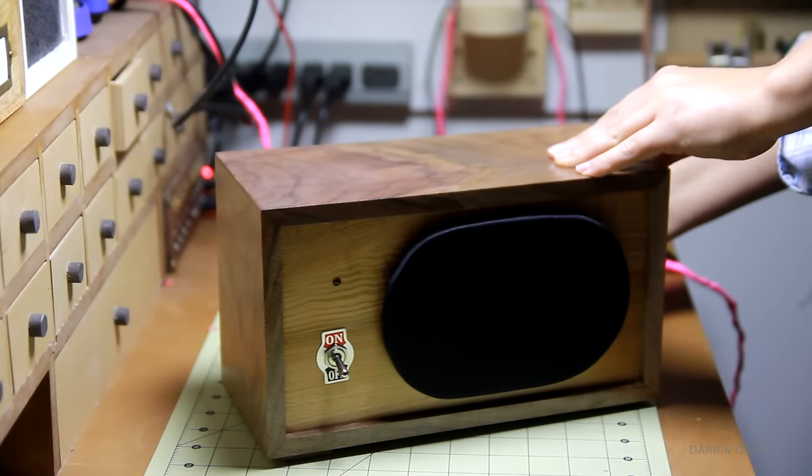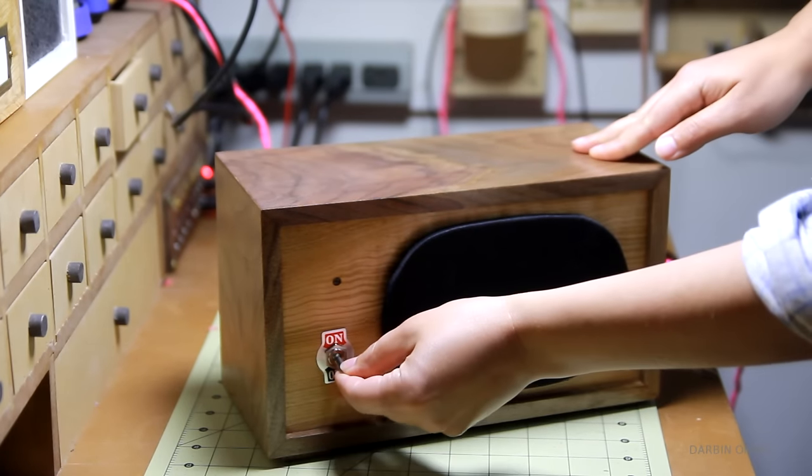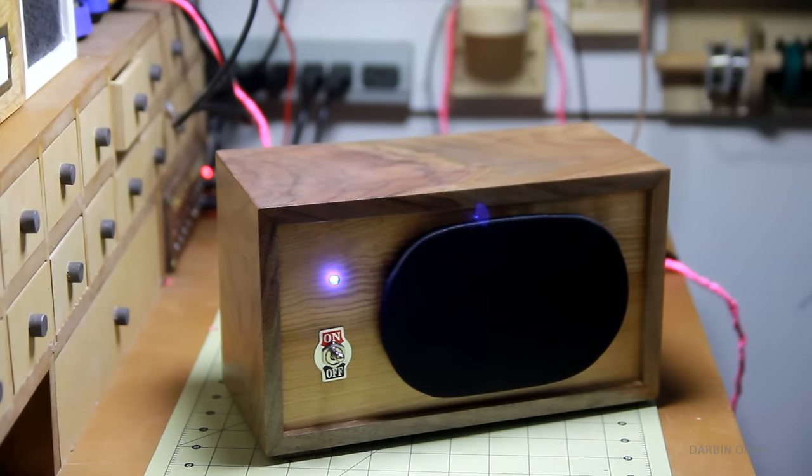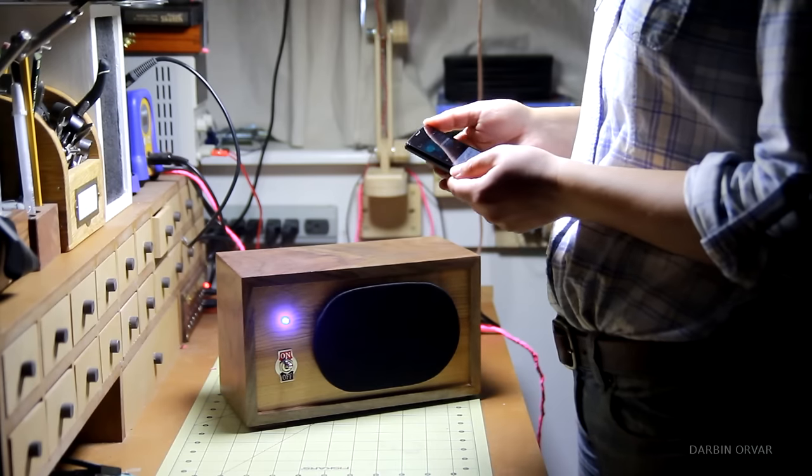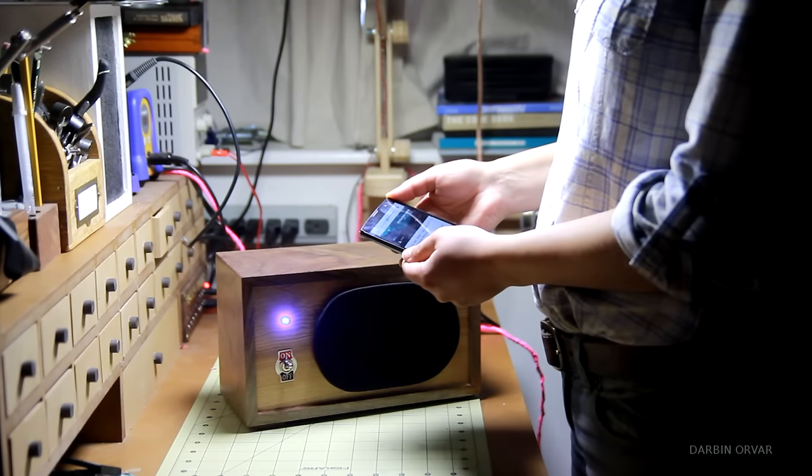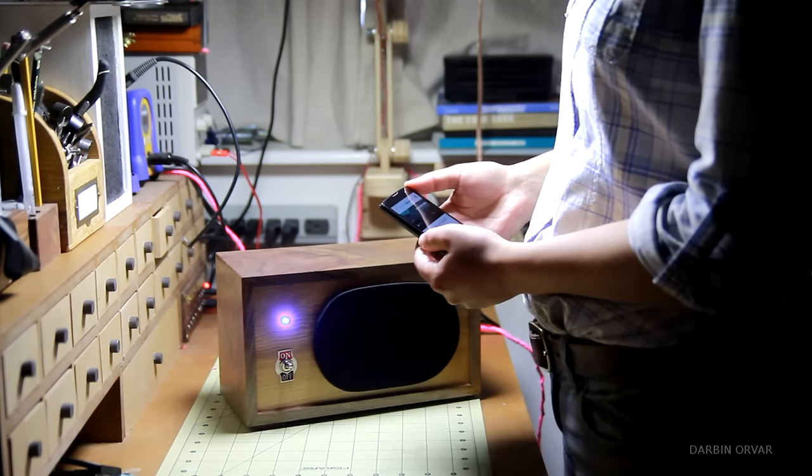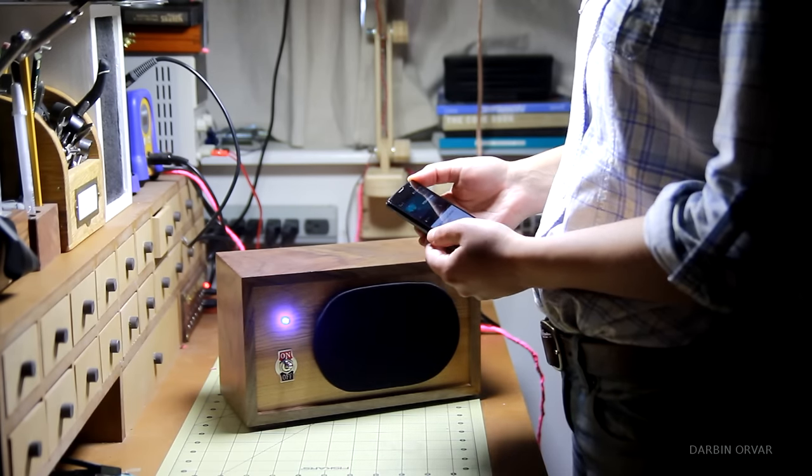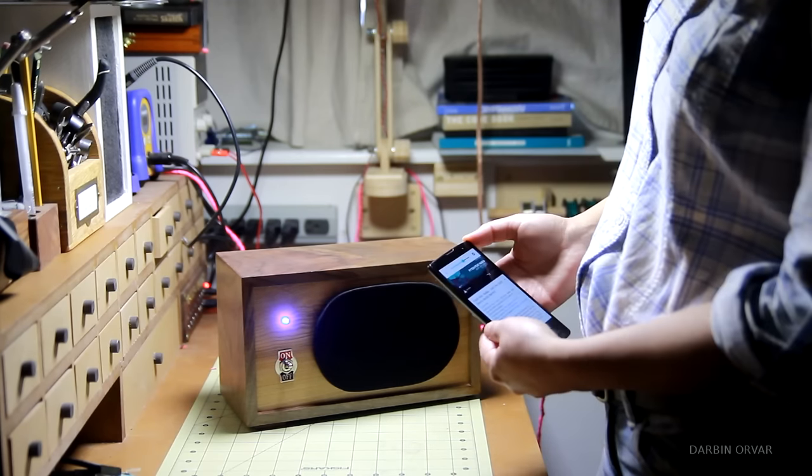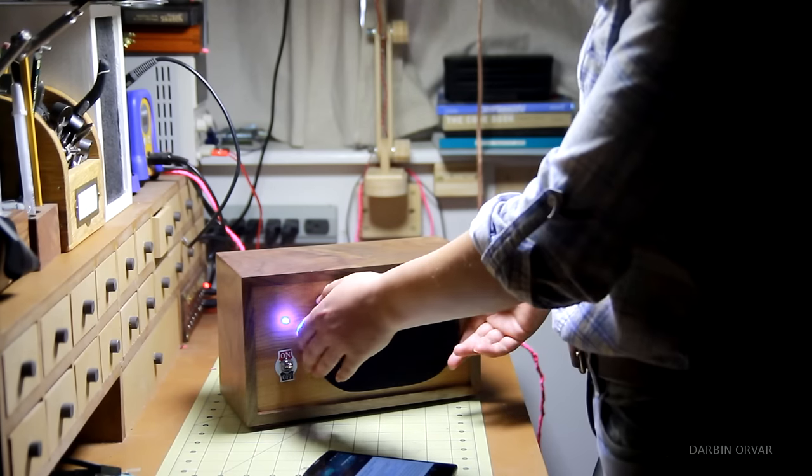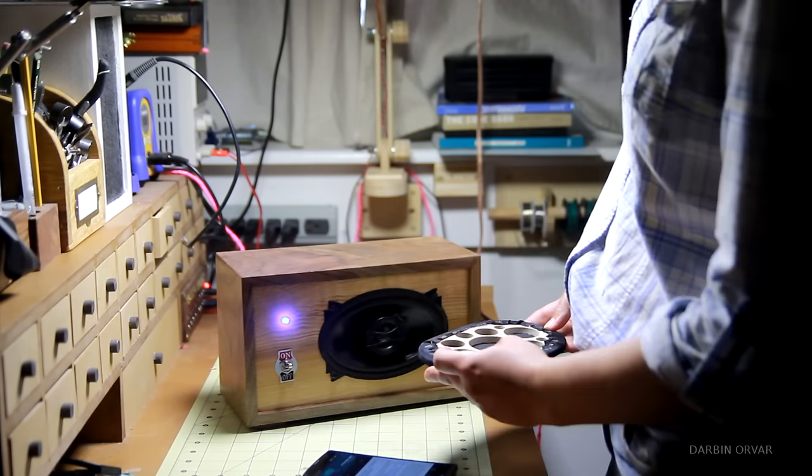Now let's try it. So this unit is completely controlled through Bluetooth, which of course you can use through your phone or computer. And that's also where you control the volume. And you really can't hear any difference whether the grill is on or off in terms of sound.